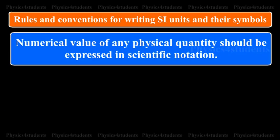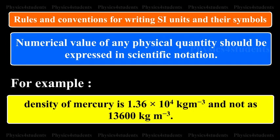Numerical value of any physical quantity should be expressed in scientific notation. For example, density of mercury is 1.36 × 10⁴ kg m⁻³ and not as 13,600 kilogram m⁻³.